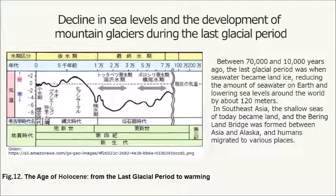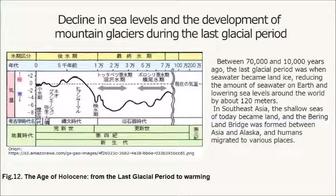During the decline in sea levels and development of mountain glaciers in the last glacial period: between 70,000 and 10,000 years ago, the last glacial period saw seawater become land ice, reducing the amount of seawater on Earth and lowering sea levels around the world by about 120 meters. In southeast Asia, the shallow seas of today became land, the Bering Land Bridge was formed between Asia and Alaska, and humans migrated to various places.